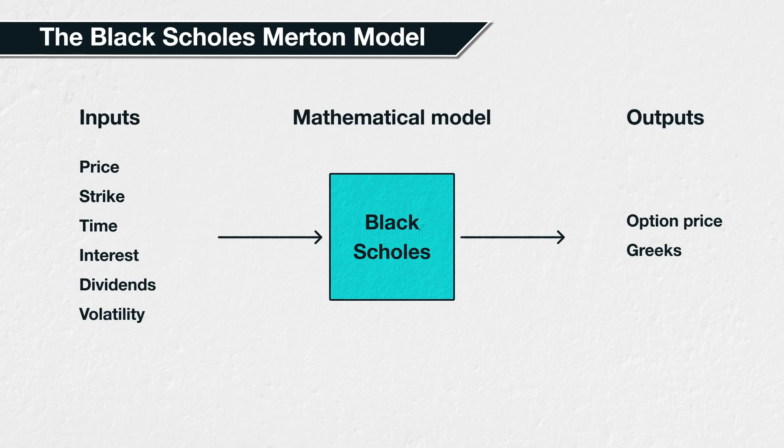You will recognise the inputs from previous sections. The five inputs are underlying price, strike price, days to expiration, the risk-free interest rate, and implied volatility. It is also possible to adapt the calculations to take account of dividends, allowing for a sixth input of the dividend yield. So you may see this input as well in any Black-Scholes calculators you use.